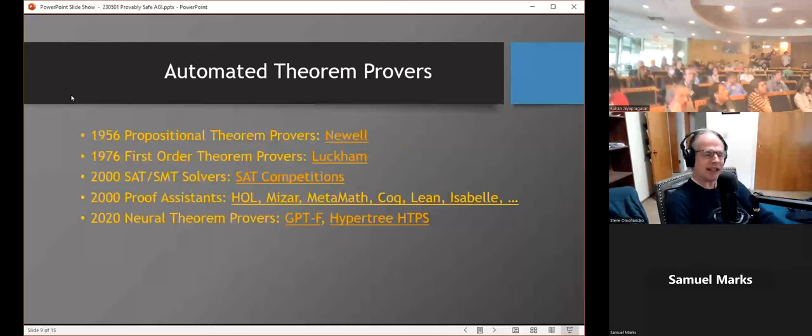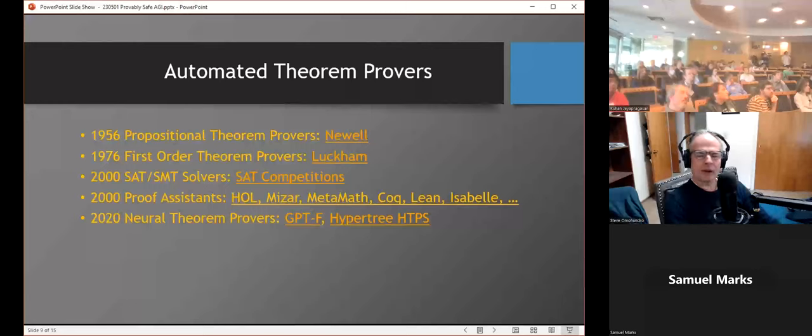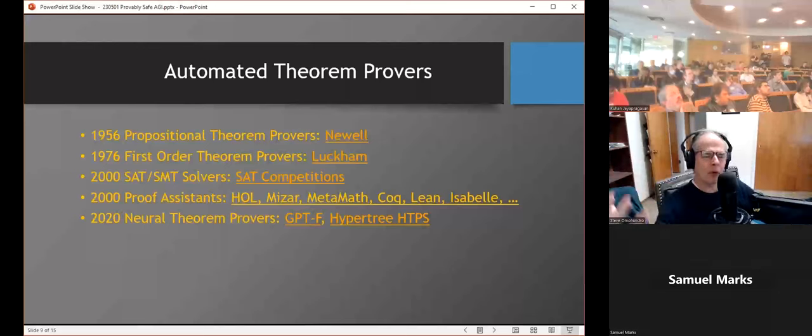So can we leverage that to control these very powerful systems that are emerging? When computers started coming out, people immediately tried to use them to do theorem proving. In 1956, we had the first propositional theorem provers. In the 70s, we had the first first-order theorem provers. Around 2000, people discovered really powerful algorithms for solving NP-complete problems, the satisfiability problem, which is basically solving propositional circuits, Boolean circuits. There have been competitions every year since then, and they can solve many problems with millions of variables, very powerful work. But that's not really powerful enough to capture the whole semantics of the world.